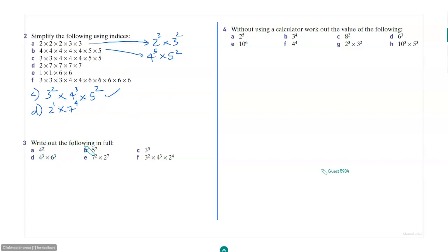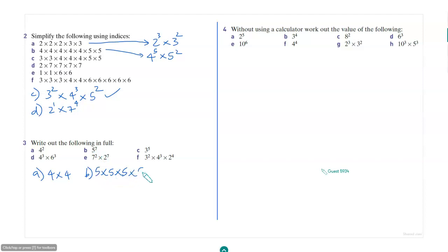Then, write out the following in full. So 4 squared will be 4 times 4. 5 to the power of 7 will be 5 times 5 times 5 times 5 times 5 times 5 times 5. Similarly, you can write everything else.